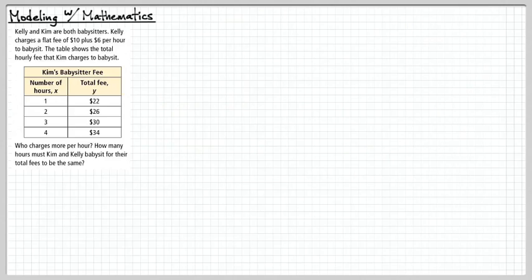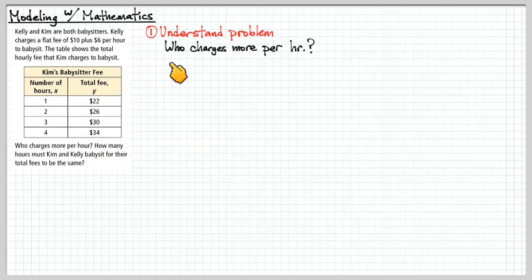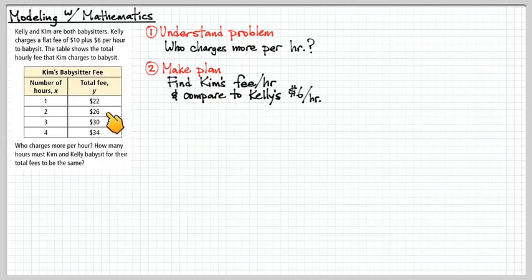Let's look at another problem. And I'm going to step through this word problem in kind of gory detail, just procedurally. How do we tackle a word problem? Here we have Kelly and Kim, two different babysitters. Kelly has this sort of charging rate where there's a flat fee of $10, and then $6 every hour after that. And for Kim, we're just given a table. We have some questions here to answer. Who charges more per hour? And how many hours must Kim and Kelly babysit before their fees are exactly the same? So let's start off by understanding the problem. There are actually two questions here. Let's take one question at a time. Who charges more per hour will be the first thing we tackle.